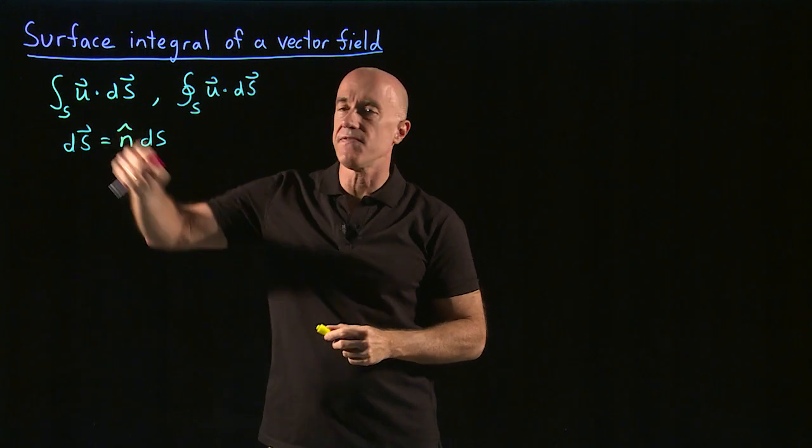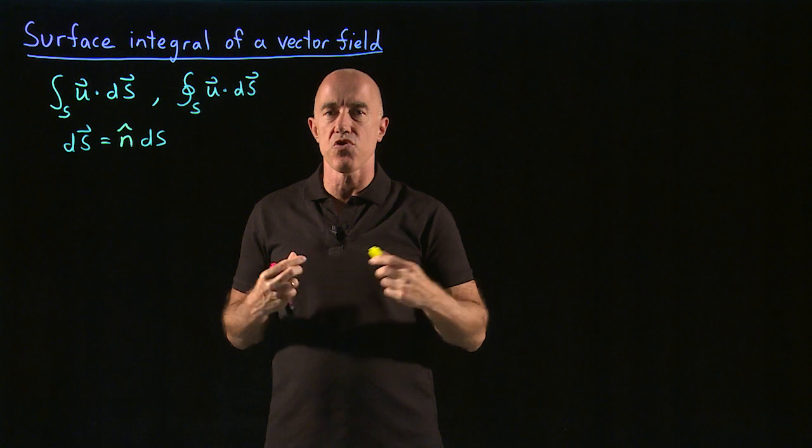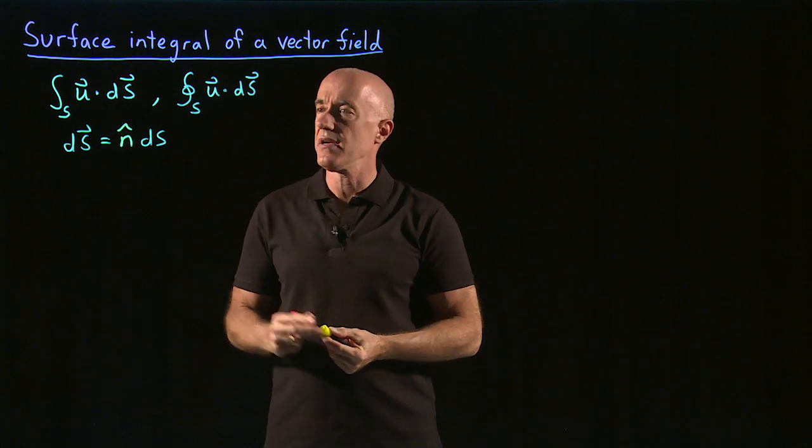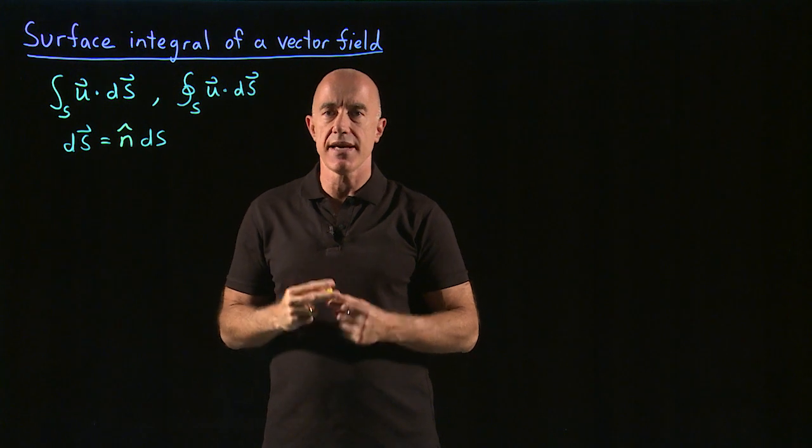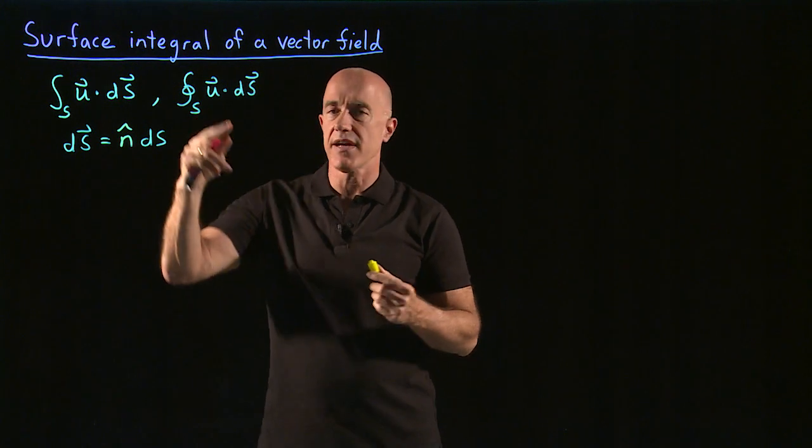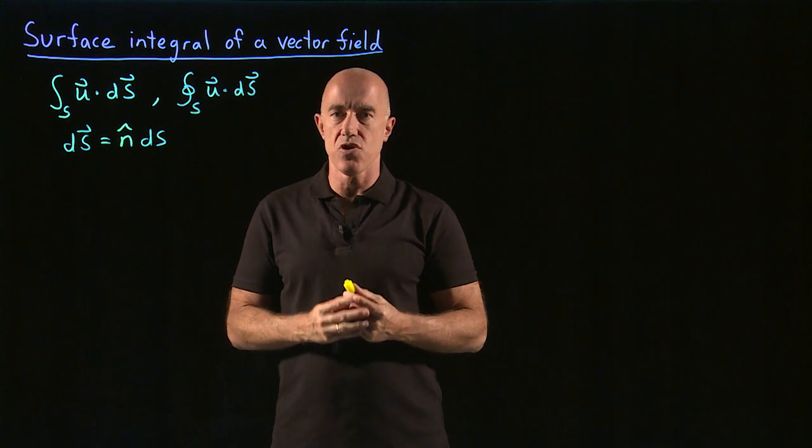In the case of an open surface, you have to specify which normal vector you're considering. In the case of a closed surface, by convention, the normal vector will always be the outward facing normal.